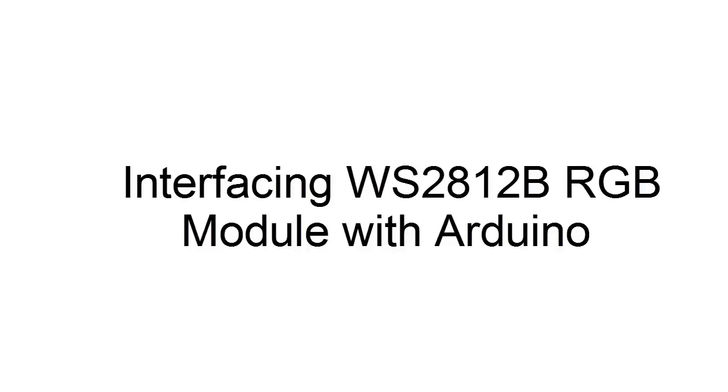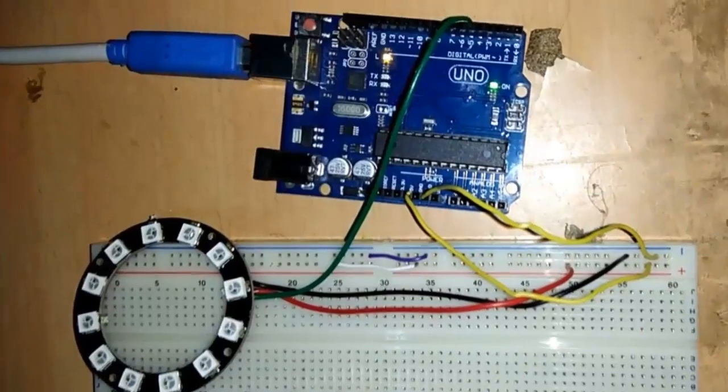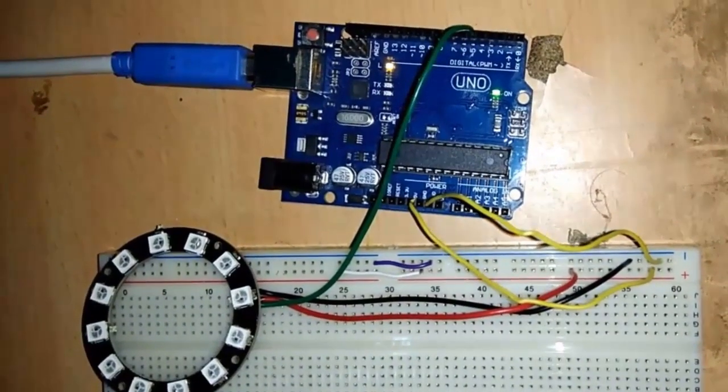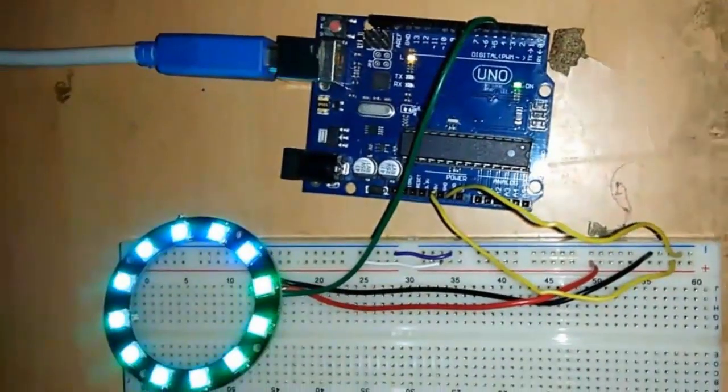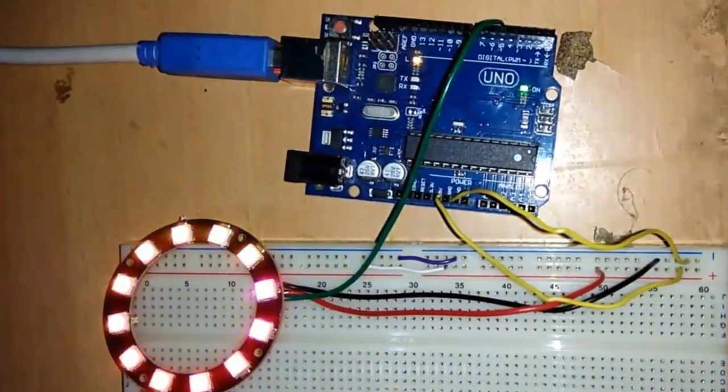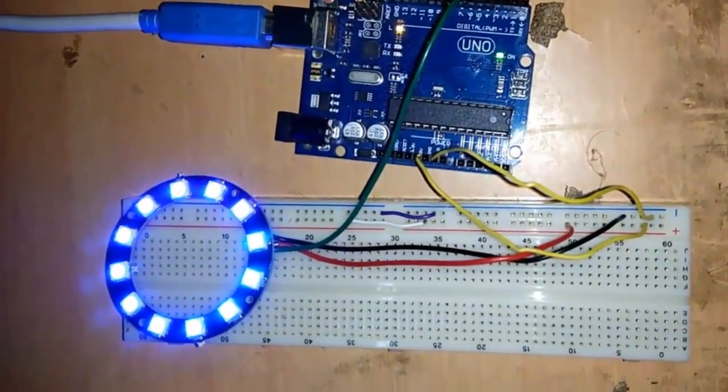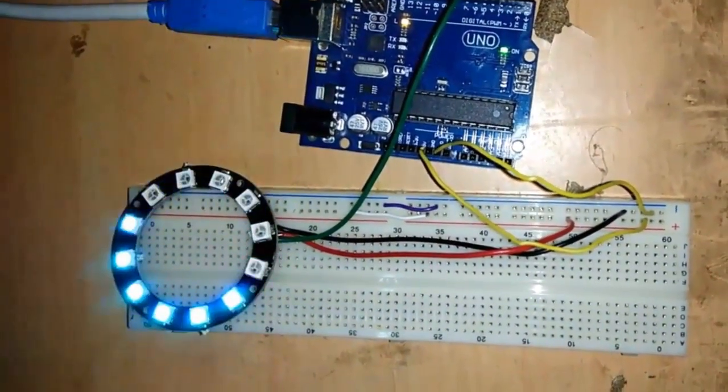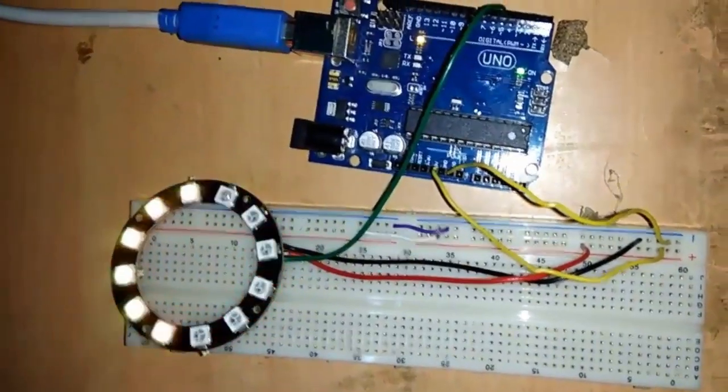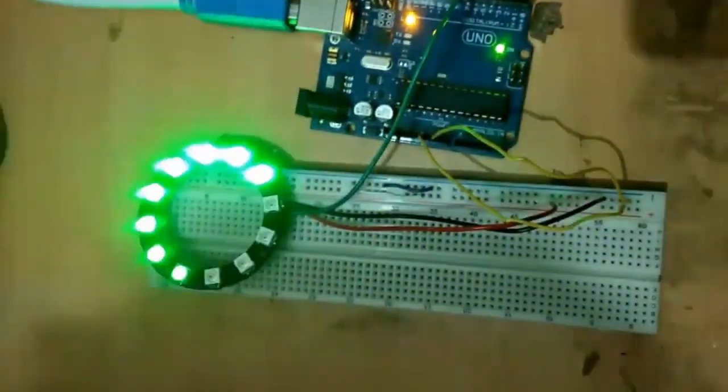Now let's begin with the tutorial. The name of this module is WS2812B module. We simply control it using a digital pin of Arduino Uno board. It has three pins: one is VCC, there is ground, and the digital output pin which can be connected to Arduino Uno.